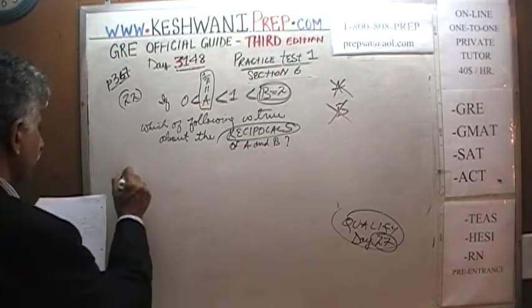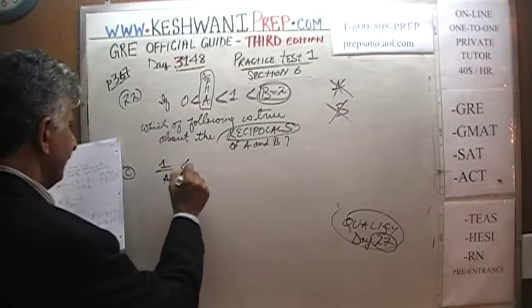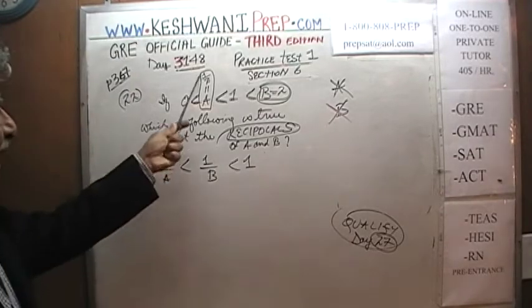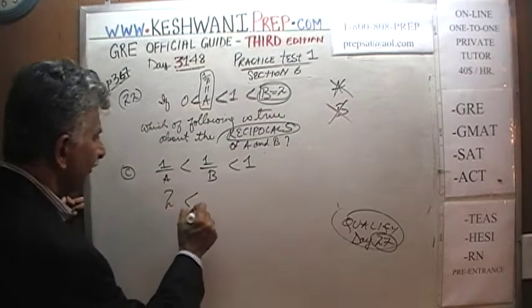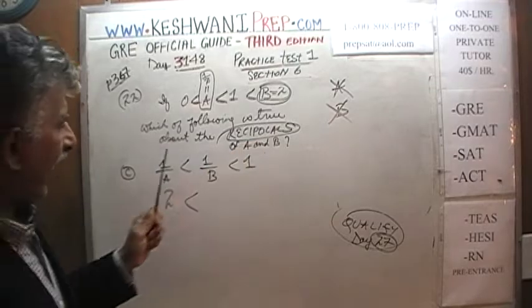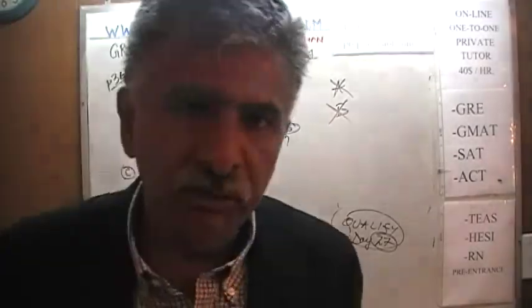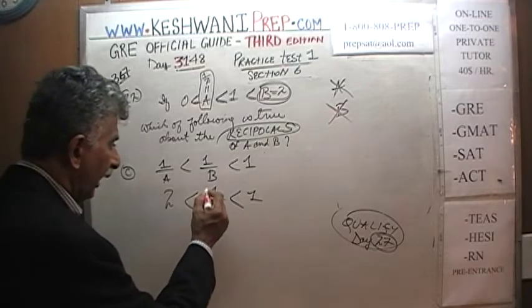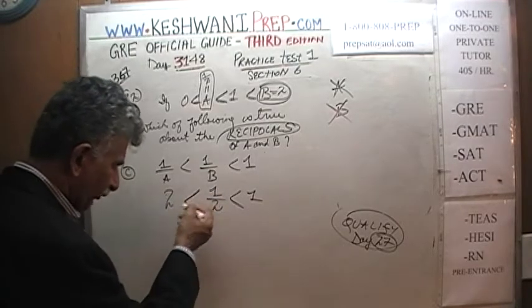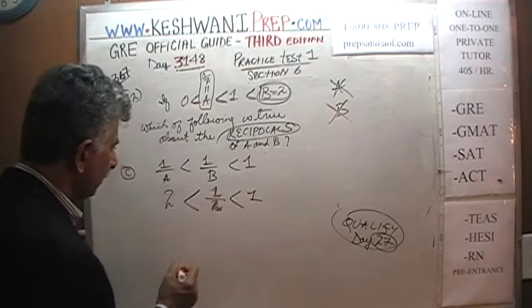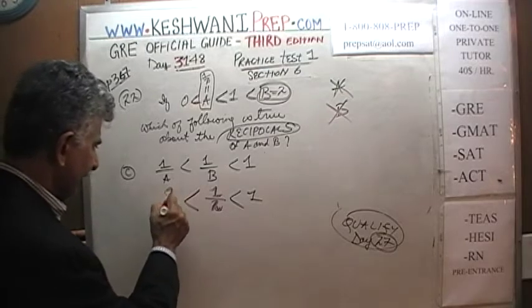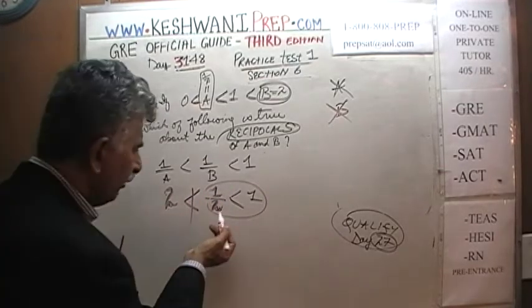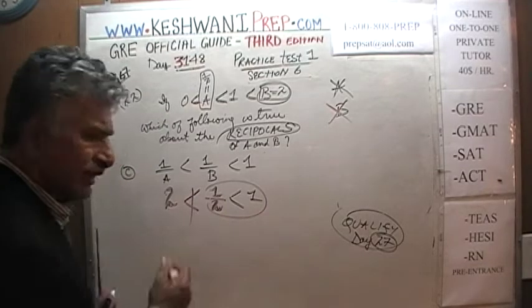C says: 1 over A is less than 1 over B, which in turn is less than 1. Reciprocal of A — A is one half — so 1 over A is 2. Reciprocal of B — B is 2 — so 1 over B is one half. The statement says 2 is less than one half. 2 is not less than one half. That makes no sense. It's not C.